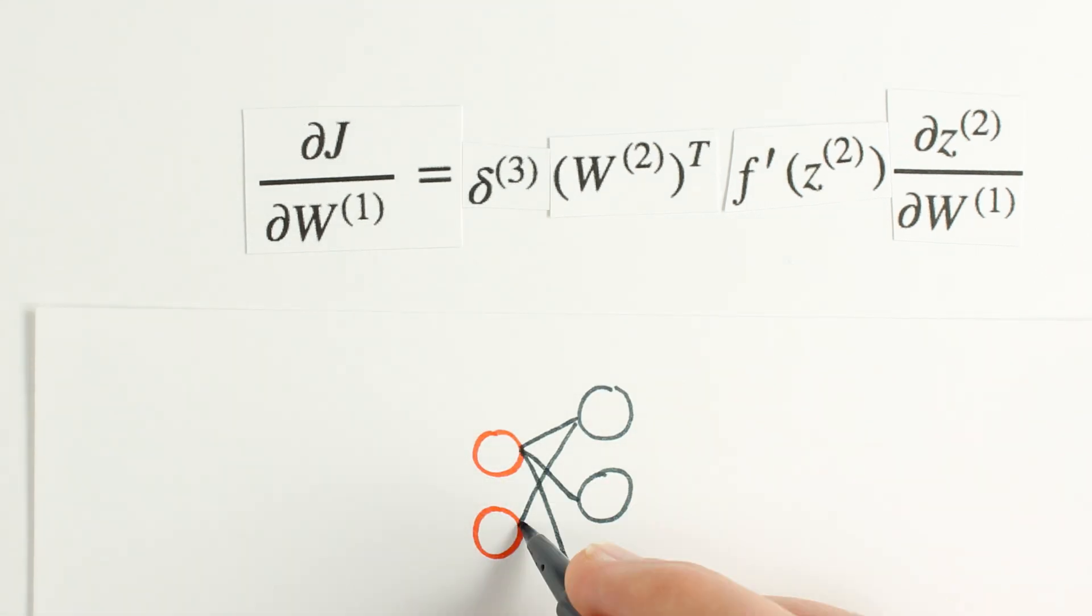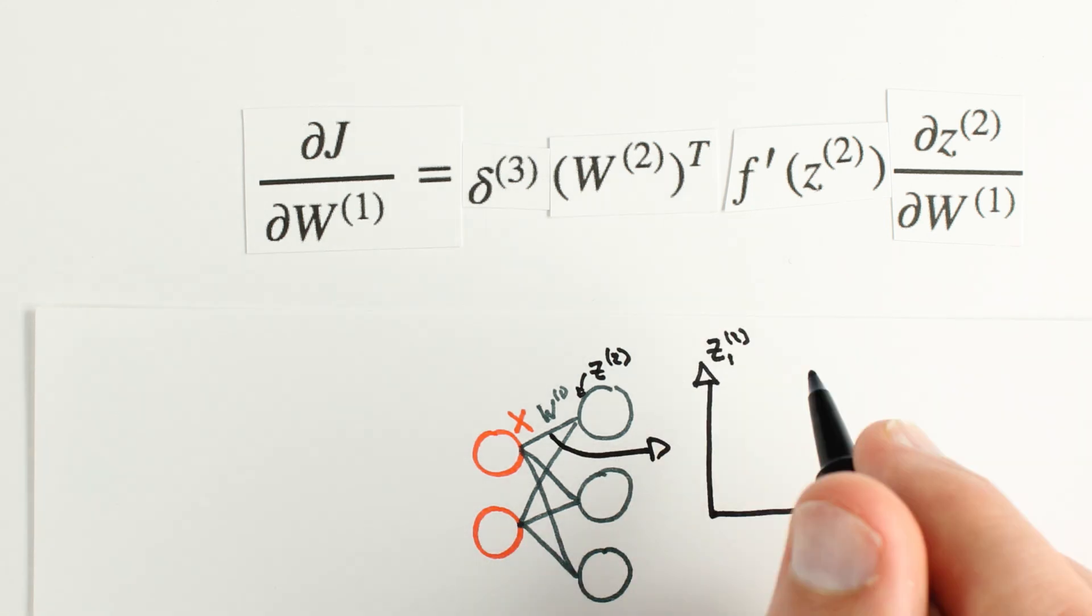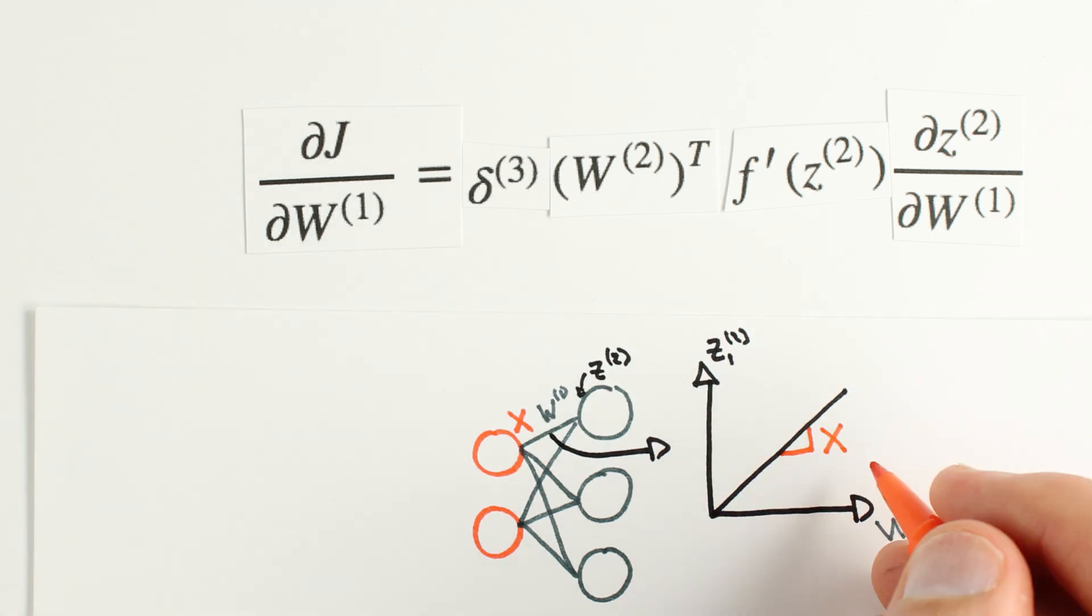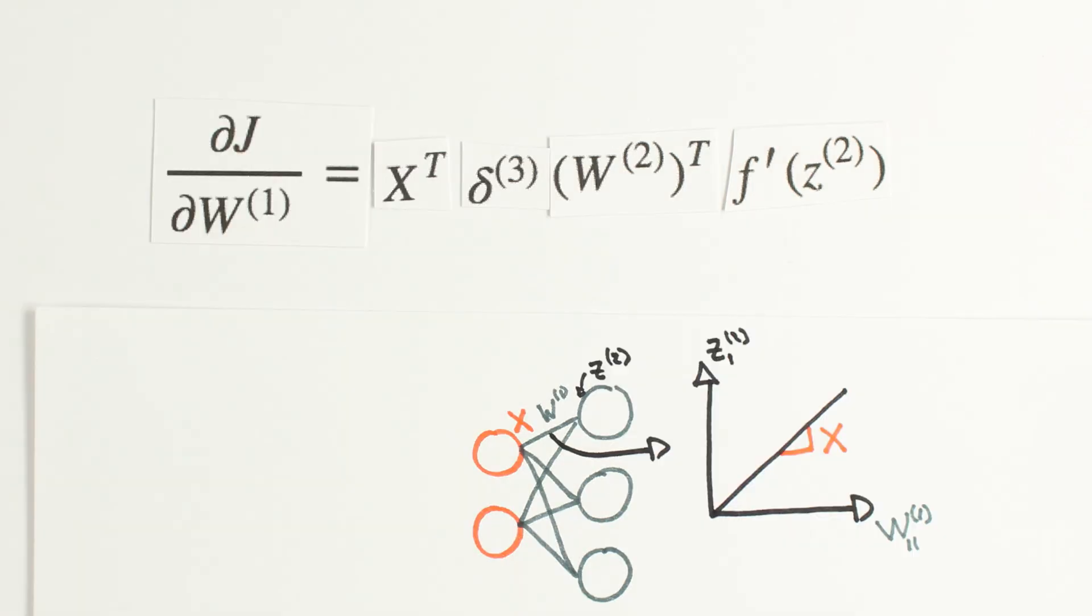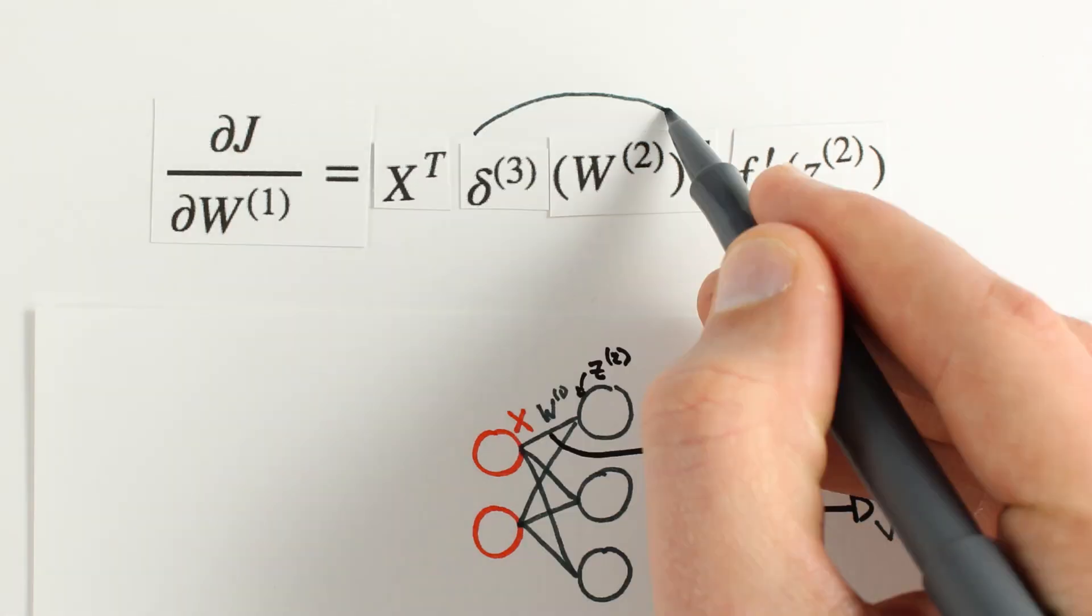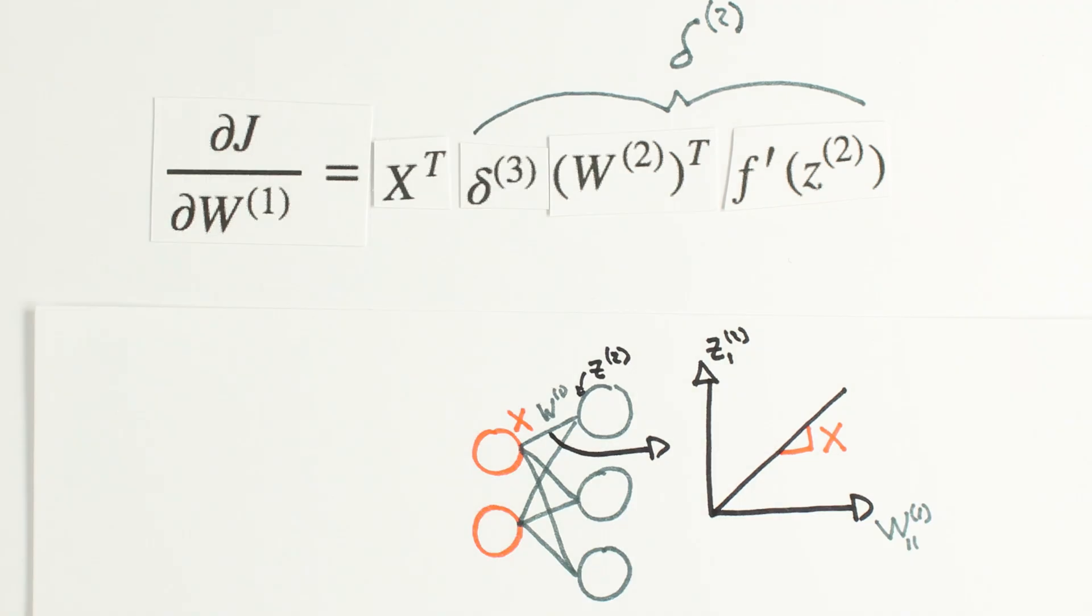Our final computation here is dz2 dw1. This is very similar to our dz3 dw2 computation. There is a simple linear relationship on the synapses between z and w1. In this case, though, the slope is the input value x. We can use the same technique as last time and multiply by x transpose, effectively applying the derivative and adding our djdw1s together across all our examples.